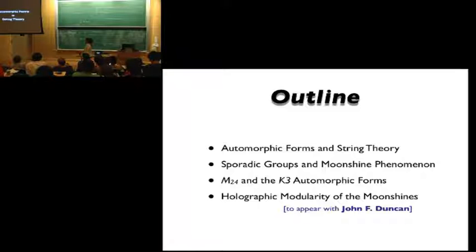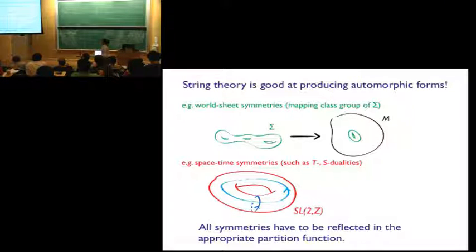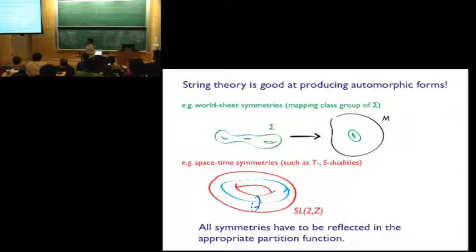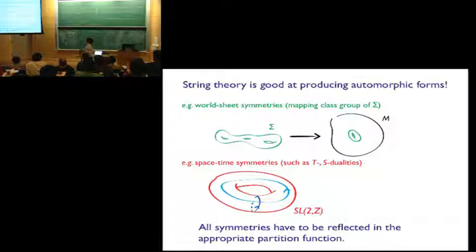So first the review part: automorphic forms in string theory. String theory is very good at producing all kinds of automorphic forms. We have all kinds of symmetries that can be realized in string theory, whether it's worldsheet symmetry or space-time symmetry. As long as it's a symmetry of the problem and you have the appropriate counting object, the symmetry should be realized. Let's see some interesting examples.